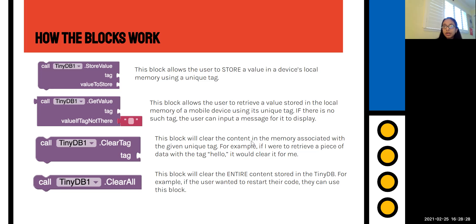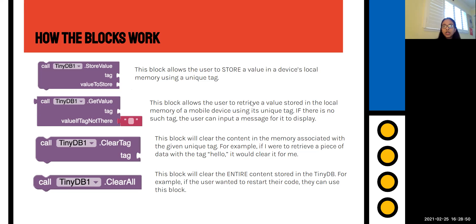If there is no such tag, the user can input a message to display — for example, 'error, not able to retrieve the data.' The third block is TinyDB1.ClearTag, which clears the content in memory associated with a given unique tag. So if I retrieved data with the tag 'Hello,' it would clear just that, not the entire thing — very handy for a to do list. The last block is the clear all tag, which clears the entire content stored in TinyDB1 — used when the user wants to restart.